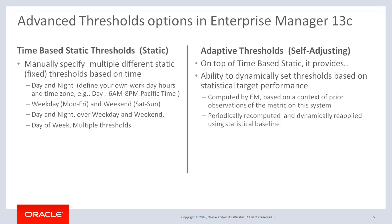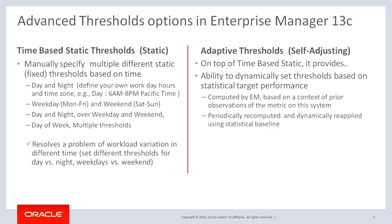Starting from the left side of the screen, time-based static thresholds allow you to manually set multiple different threshold values per single metric based on time, such as day and night or weekday and weekends, or even with multiple combinations. This resolves the problem of workload variation at different times. On top of that, on the right-hand side, another option is adaptive, which is a self-adjusting option. The time-based setting is common to both options.